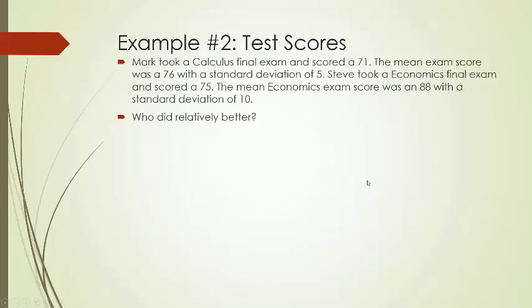Let's just do one more quick example here. Mark took a calculus exam and Mark scored a 71. So his x-value is a 71 on his final exam for calculus. The mean score in calculus was a 76 and the standard deviation was 5. But then you have someone called Steve and he took an economics final exam and he got a 75. So he scored higher on his final than Mark. But the mean score on the economics final exam was an 88 with a standard deviation of 10.